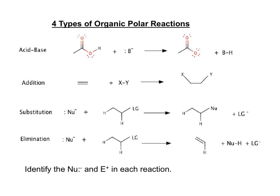Other types of polar reactions are addition reactions, substitution reactions, and elimination reactions. We will look at these types of organic reactions in this course. In each reaction type, a nucleophile or Lewis base reacts with an electrophile, a Lewis acid.